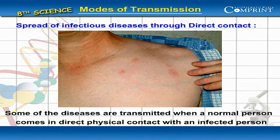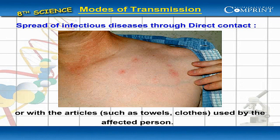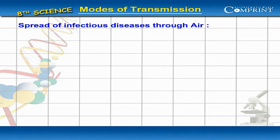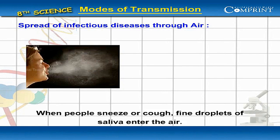Spread of infectious diseases through direct contact: some diseases are transmitted when a normal person comes in direct physical contact with an infected person, or with articles such as towels or clothes used by the affected person. Scabies, which is caused by the itch mite, is a good example of disease transmission through direct contact.